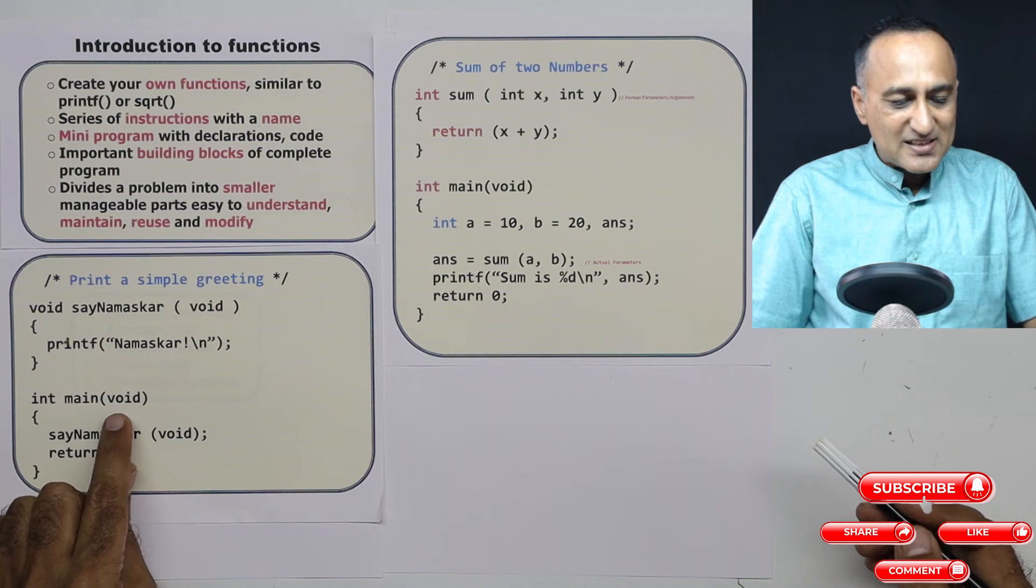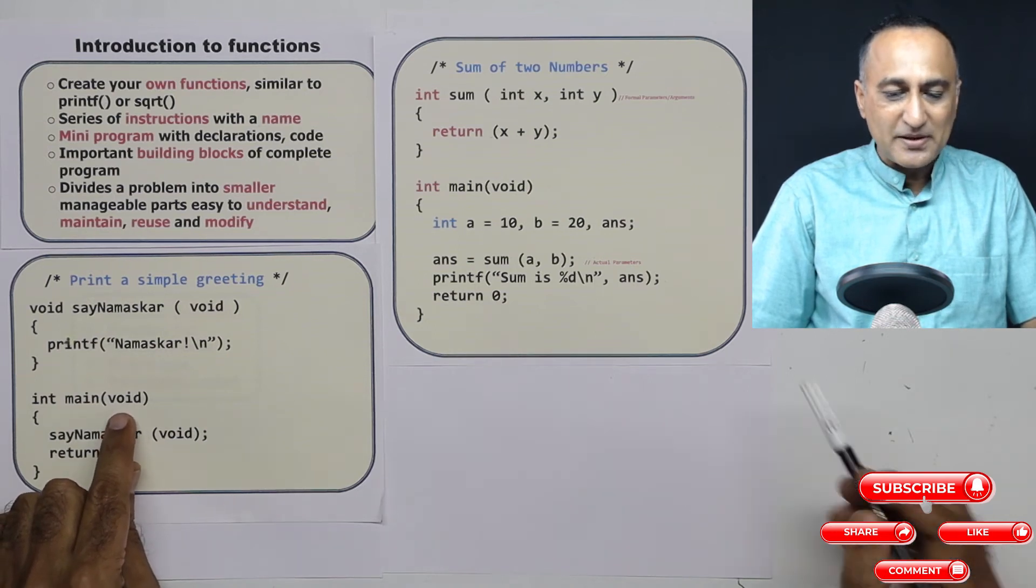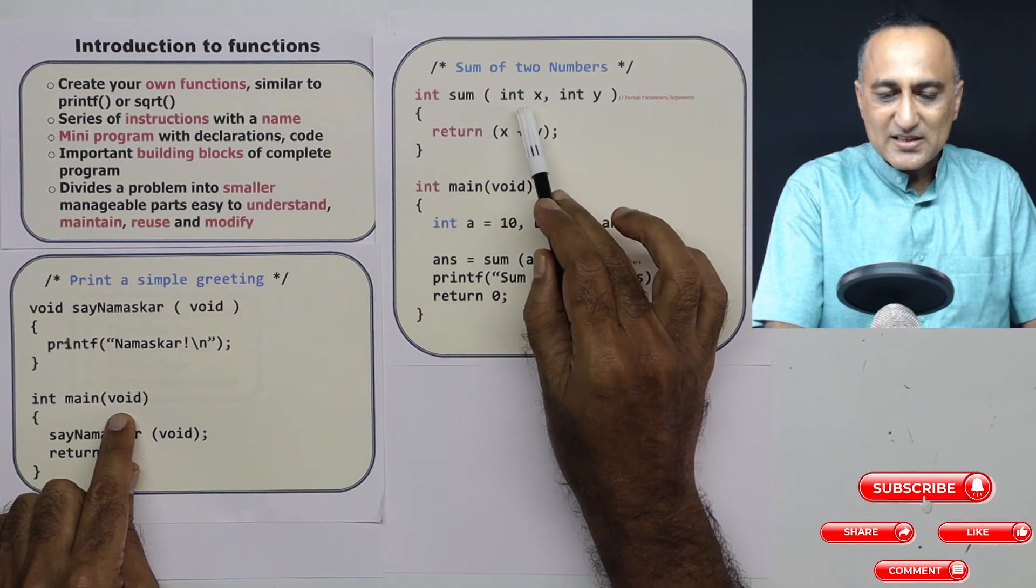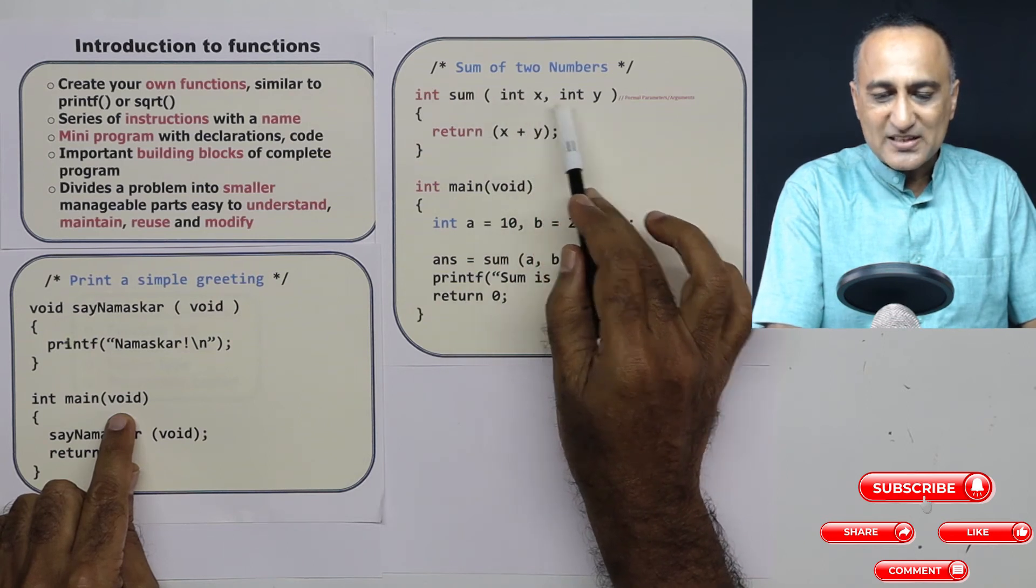Void means main is not accepting any parameters. If you see here, sum was accepting two parameters x and y.